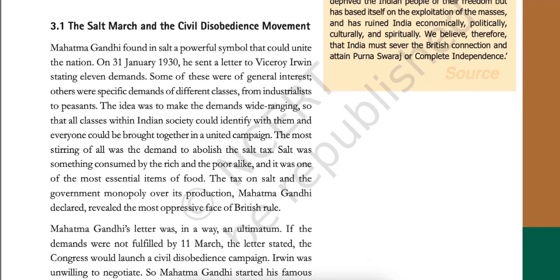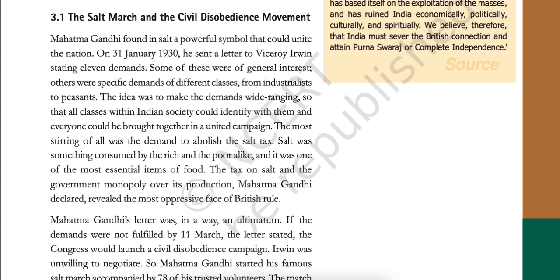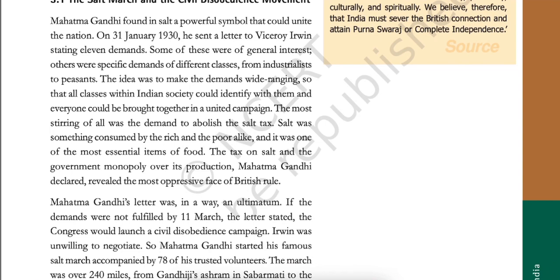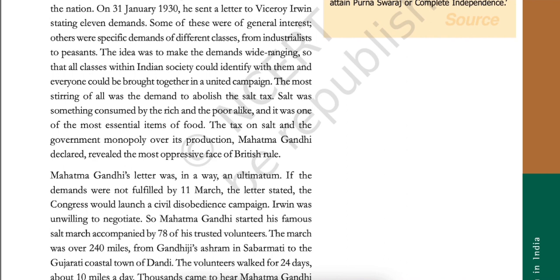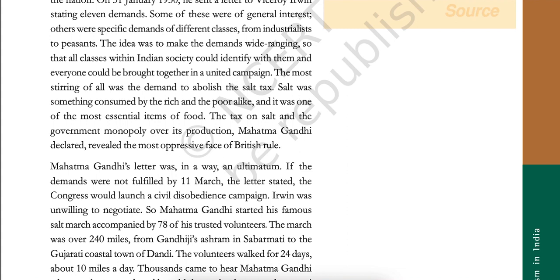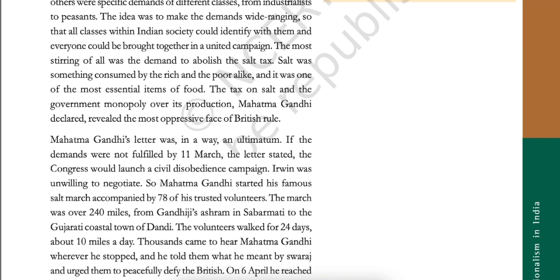The Salt March and the Civil Disobedience Movement. Mahatma Gandhi found in salt a powerful symbol that could unite the nation. On 31 January 1930, he sent a letter to Viceroy Irwin stating 11 demands. Some of these were of general interest; others were specific demands of different classes, from industrialists to peasants. The idea was to make the demands wide-ranging so that all classes within Indian society could identify with them. The most stirring of all was the demand to abolish the salt tax. Salt was something consumed by the rich and the poor alike, and it was one of the most essential items of food. The tax on salt and the government monopoly over its production, Mahatma Gandhi declared, revealed the most oppressive face of British rule.